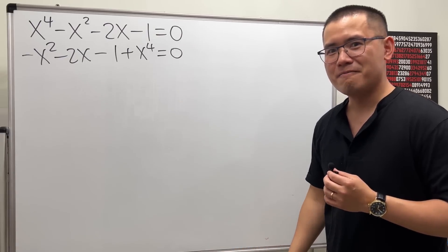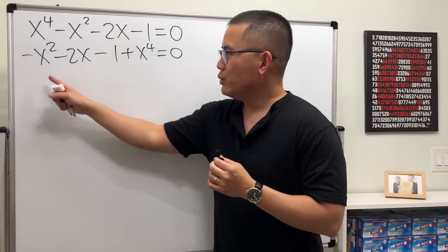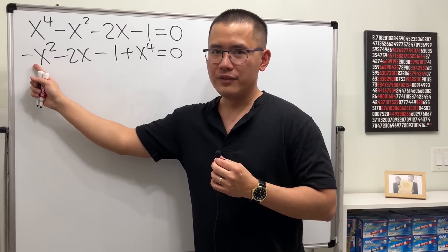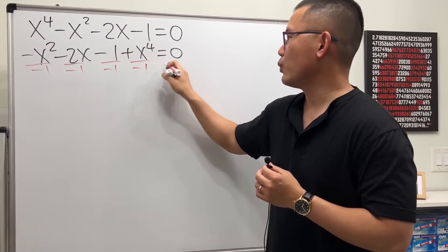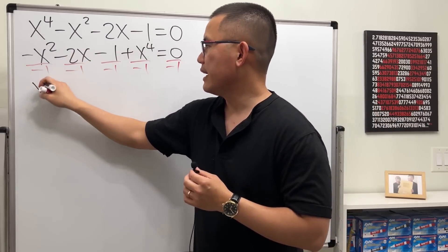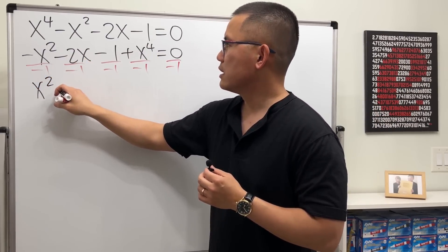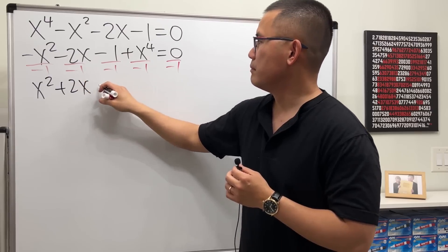But usually we don't like to have a negative in front of the x squared. It's okay, let's divide everybody by negative one.